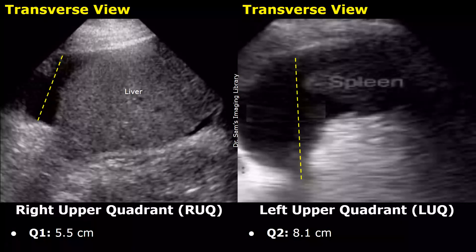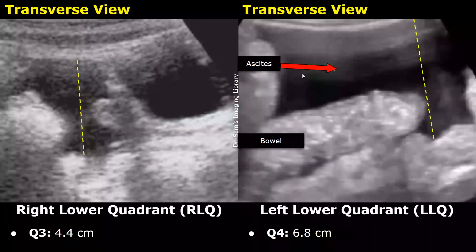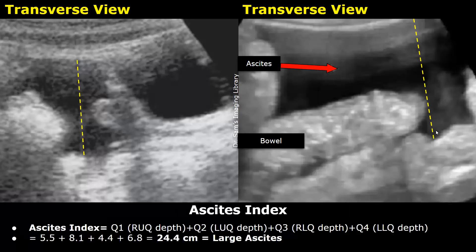Now we will look at another example. Here, Q1 value is 5.5 centimeters, Q2 value is 8.1 centimeters, the right lower quadrant value is 4.4 centimeters, and the left lower quadrant measures 6.8 centimeters. By adding all four values: 5.5 plus 8.1 plus 4.4 plus 6.8 equals 24.4 centimeters. This value is also greater than 20, so it is classified as large Ascites.